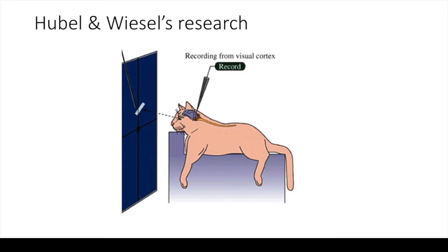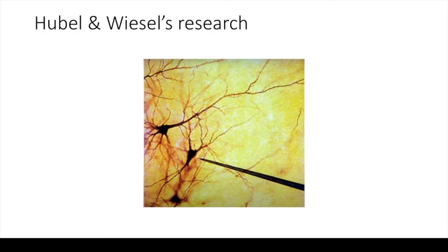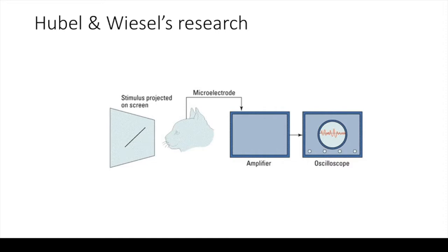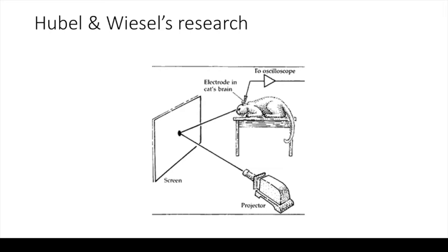Hubel and Wiesel did their research by showing images to anesthetized cats while simultaneously recording the activity of individual neurons in their primary visual cortex. They put an electrode next to a cell to record the signal associated with the cell's action potential. The microelectrode was connected to an amplifier, which then sent the amplified signal to an oscilloscope. So they could both observe and hear evidence of a cell being activated. A vertical deflection in the oscilloscope means a voltage difference, which indicates that the cell is active. You can also hear a sort of click sound when the cell sends a signal.